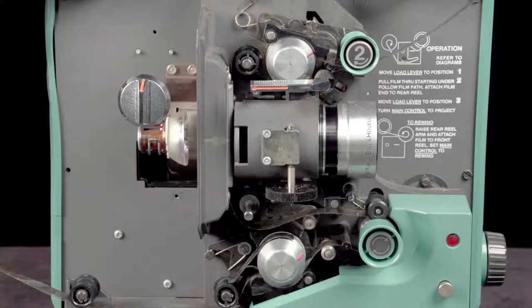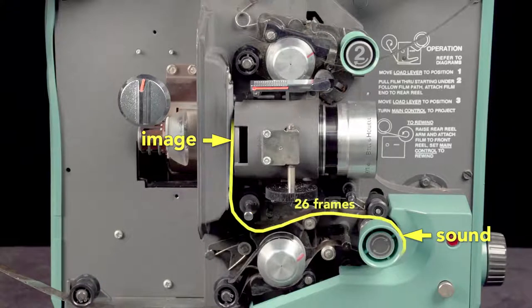Because the image is projected here, and the sound is read down here, the soundtrack is offset 26 frames ahead of the picture in 16mm films. This offset ensures that the picture and sound are correctly synced.